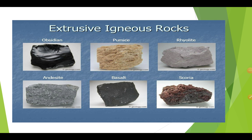These are some examples of extrusive igneous rocks: obsidian, pumice, rhyolite, andesite, basalt, and scoria. So these are some examples of extrusive as well as intrusive igneous rocks.